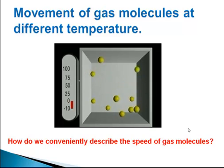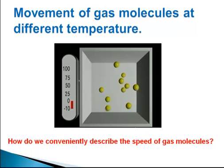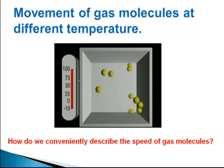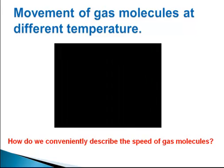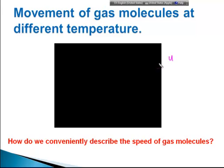At any given temperature, the gas molecules move continuously. When the temperature is increased, their movement increases. Now, the molecules move at different speeds, speed being U. They move at different speeds, and so it will be hard for us to describe the movement of each of these gas molecules without a single representative.